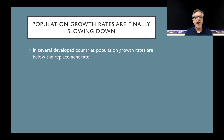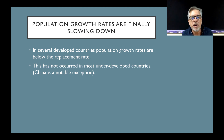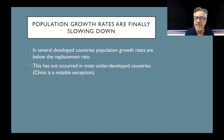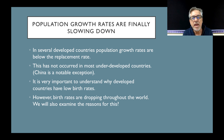Population growth rates are finally slowing down globally. In several developed countries, population growth rates are below replacement rates, notably places like Italy, other countries in Europe, and Japan. This has not occurred in most underdeveloped countries, with China being the notable exception. You may wonder how countries with below-replacement birth rates can continue to grow — that mystery will be cleared up in the Hans Rosling video and in the next section on population age structure. Birth rates are dropping throughout the world, even in poorer countries, and we will examine the reasons for this.